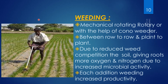The next practice is weeding. In the SRI method, mechanical weeding is done using a rotating rotary or Kona weeder between the rows and plants. Due to reduced weed competition, the soil gives roots more oxygen and nitrogen, and increases microbial activity as weeds decompose. Each additional weeding increases productivity by about 2 tons per hectare, resulting in more tillers and more yield.